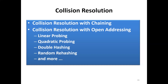Different approaches are used to solve collision. One of them is the chaining approach, sometimes called closed addressing. Another approach is open addressing. Under open addressing you have: linear probing, quadratic probing, double hashing, and random rehashing. We are going to look at all of these. Let's start with the first one, which is chaining.